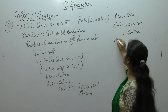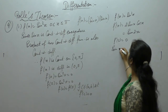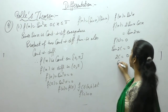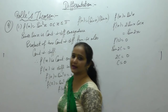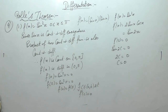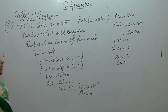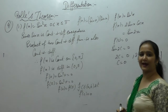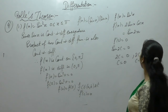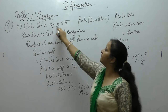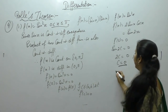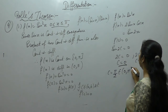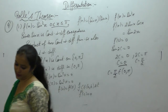Sin 2c = 0 gives 2c = 0 or 2c = π, so c = 0 or c = π/2. The point c = 0 is an endpoint of the interval, so we take c = π/2, which belongs to (0, π). Therefore Rolle's theorem is verified.